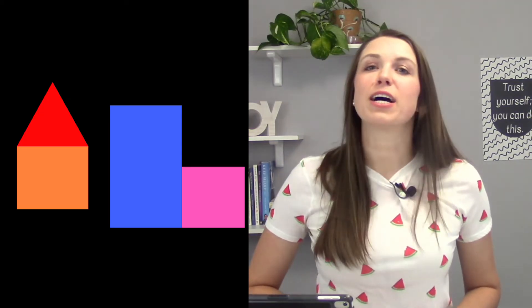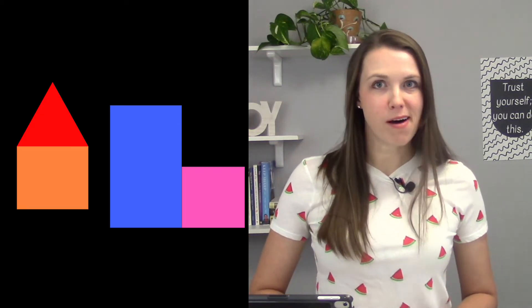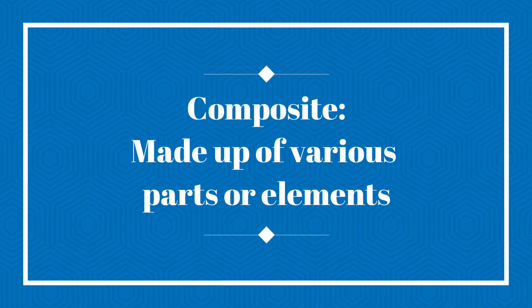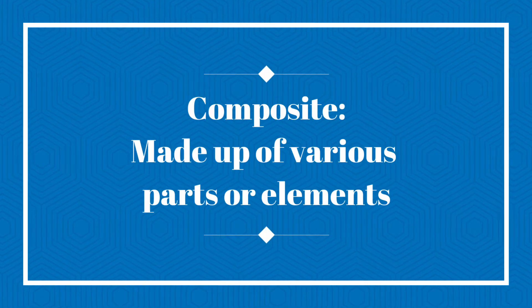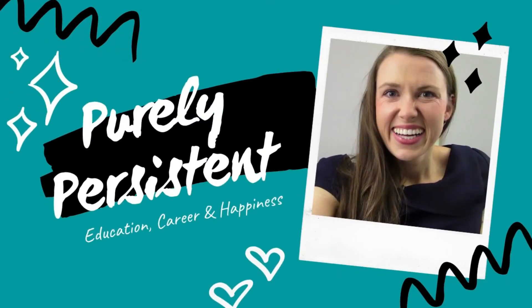Hello my friends and welcome back. Today we are going to find the area of composite shapes. Now composite simply means made up of various parts or elements. So essentially we have two shapes and we're pushing them together, gluing two shapes together. Welcome to Purely Persistent. I'm Michelle.